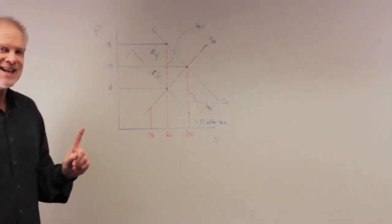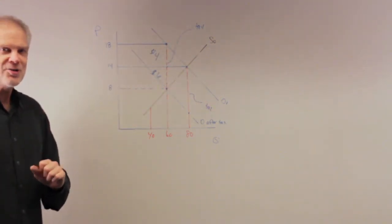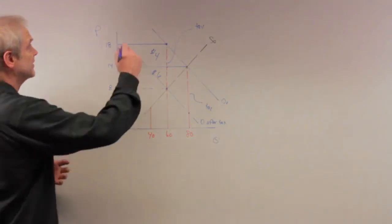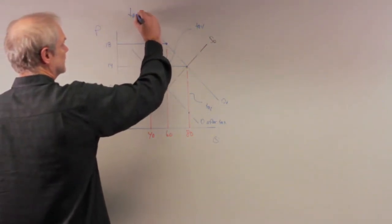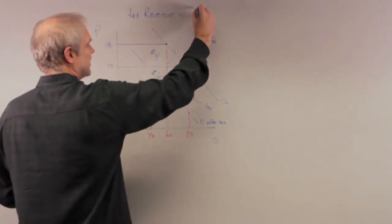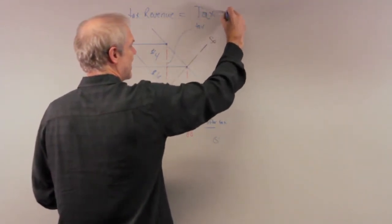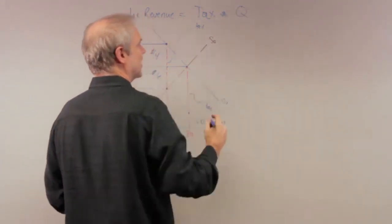And we know the per unit tax is this amount right here, is $10. So the tax revenue for the government is simply tax, the amount of the tax in dollars, right, times equilibrium quantity.